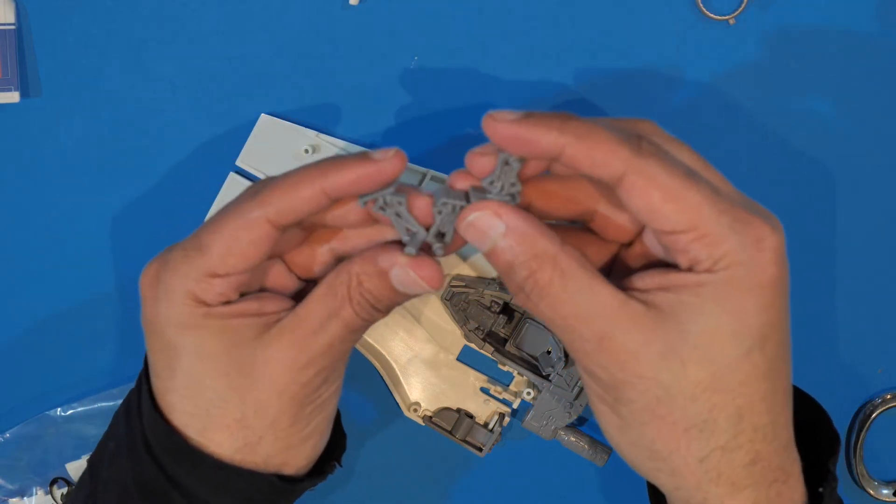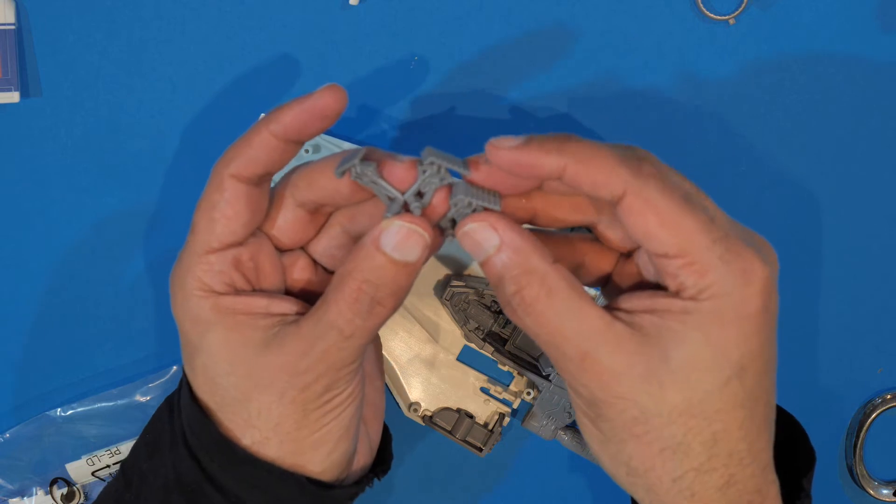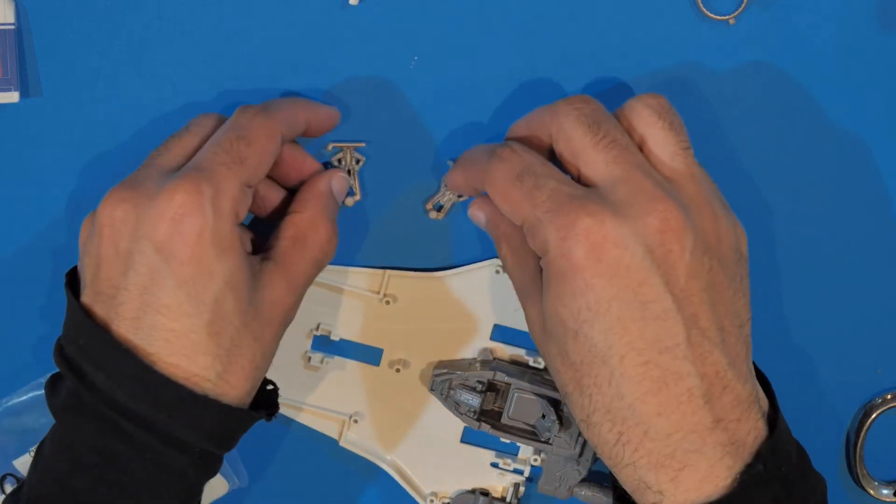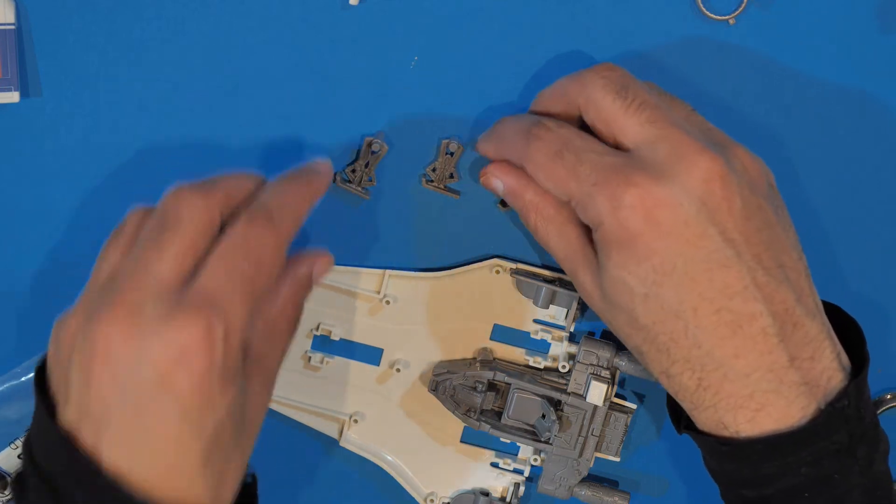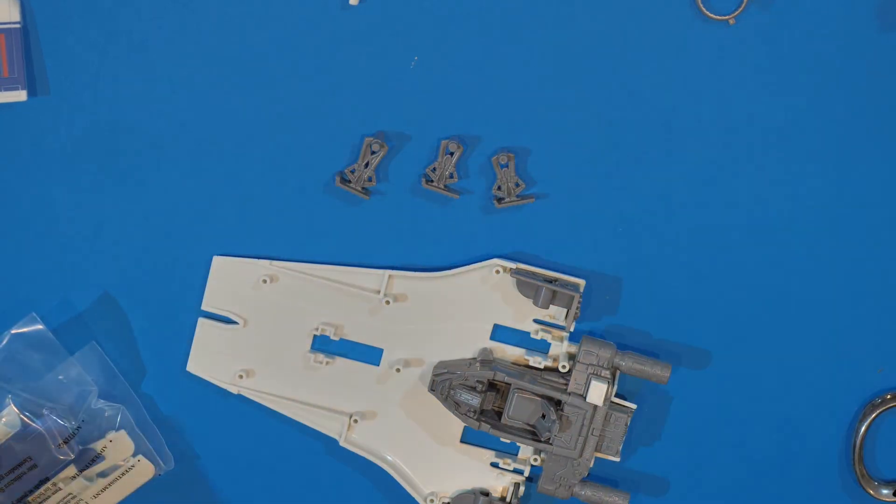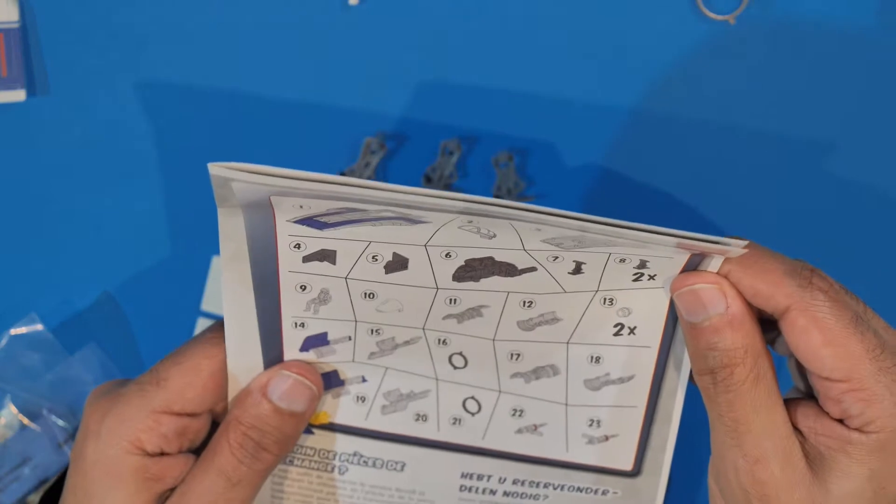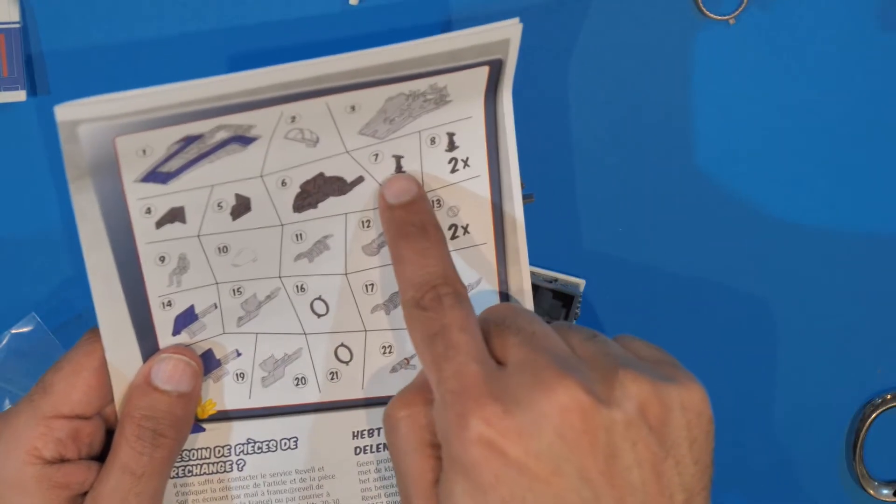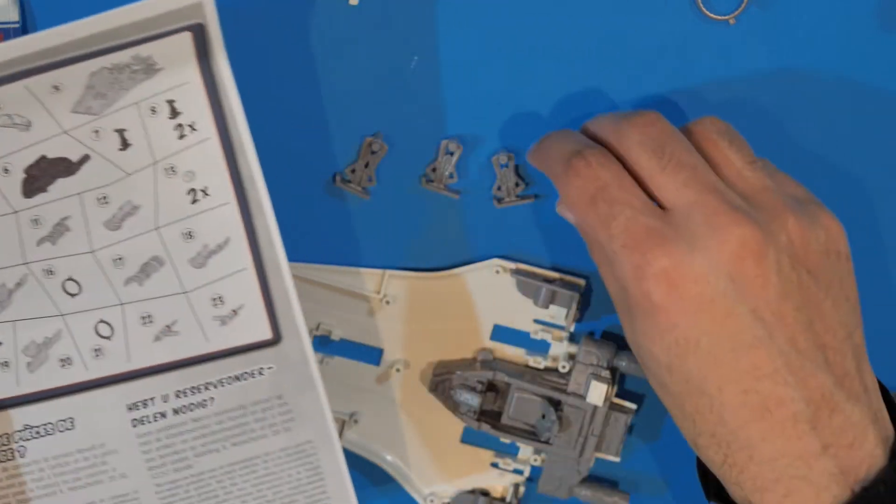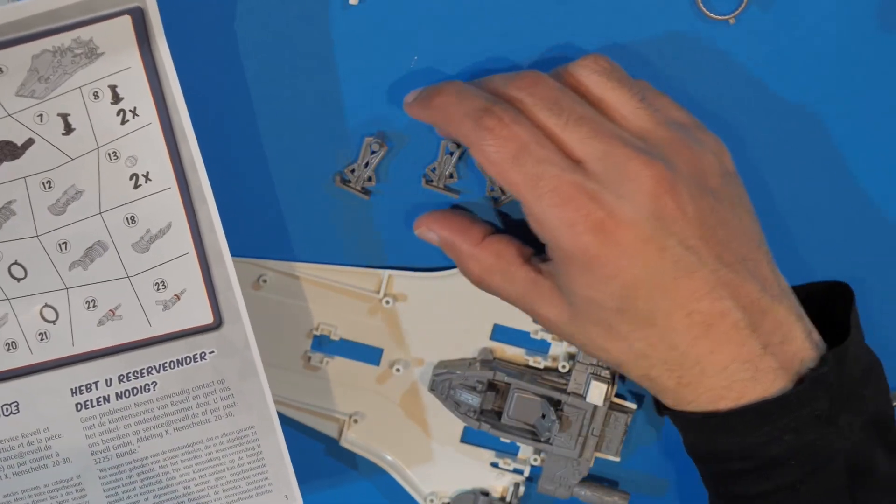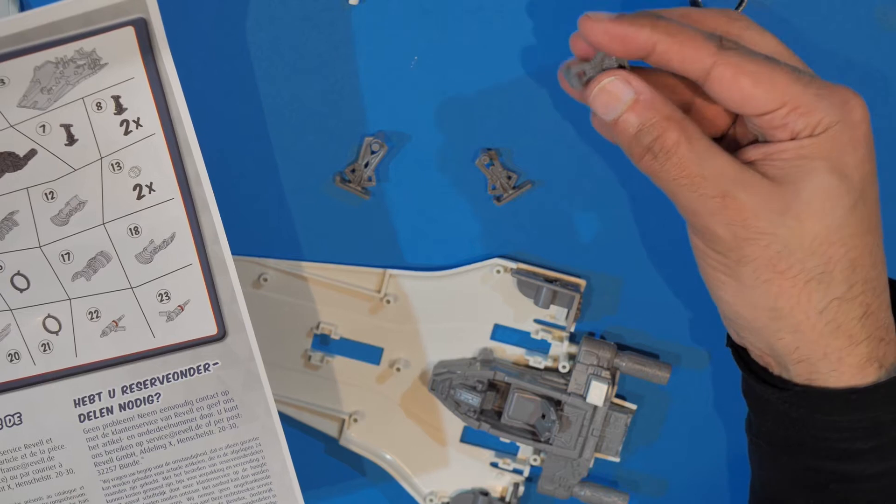So are they all identical? Apparently, what does it say about them? So there's two of part seven, so which is part seven? There's one of part seven, two of part eight. How do you tell them apart?